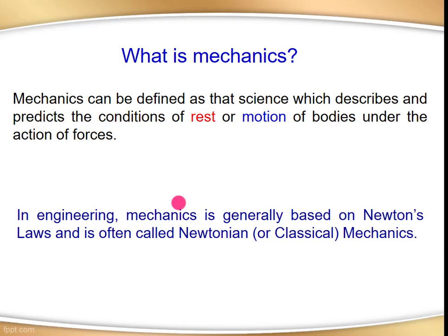Using Newton's laws, it is very difficult to handle situations involving the motion of bodies close to the speed of light, and circumstances requiring consideration of bodies of extremely small size and mass. In such cases, those extreme conditions can be treated in relativistic mechanics and quantum mechanics. In this class, we are going to consider only classical mechanics, or Newtonian mechanics, which is based on Newton's laws.